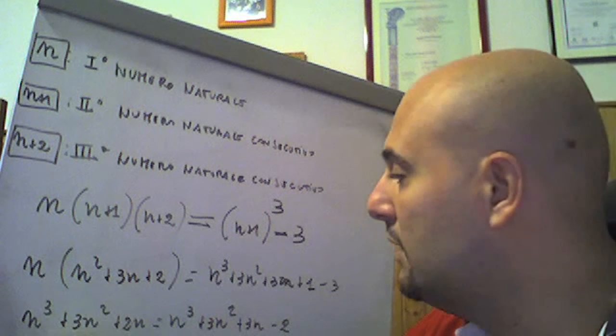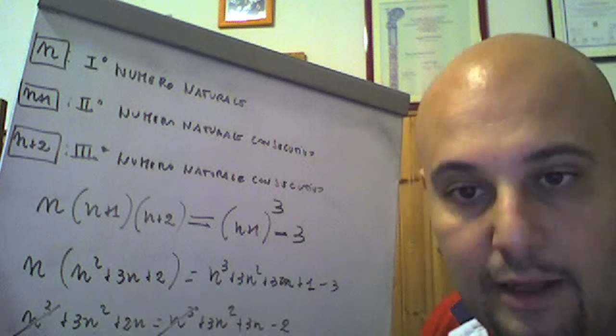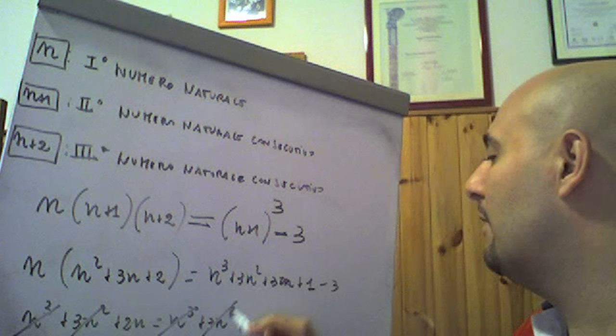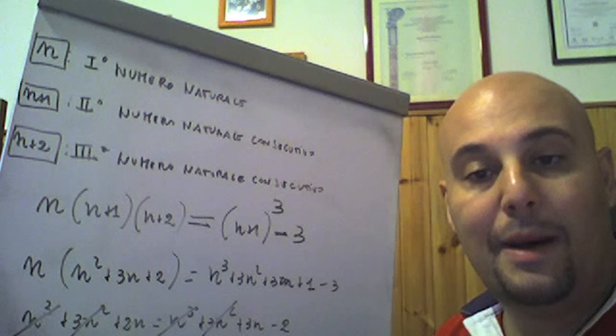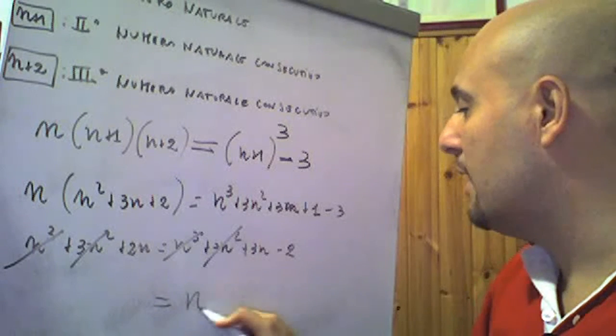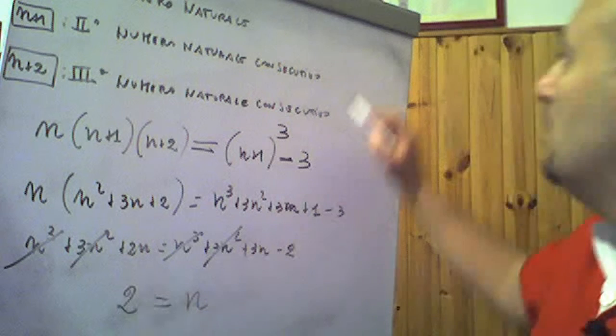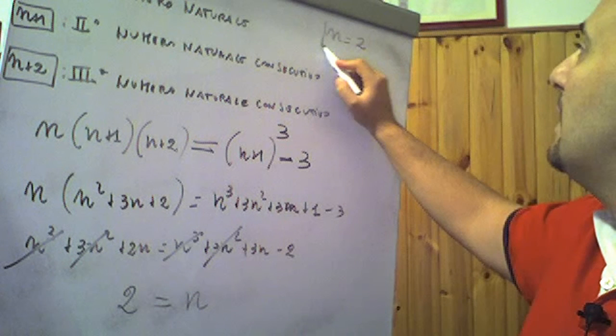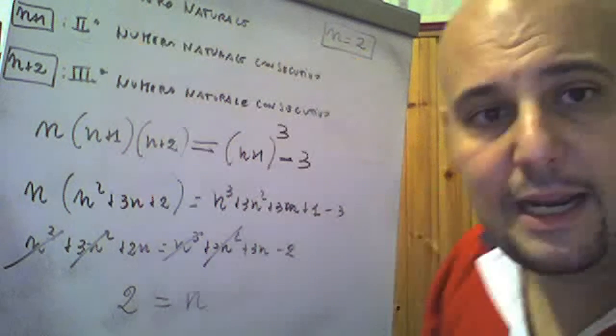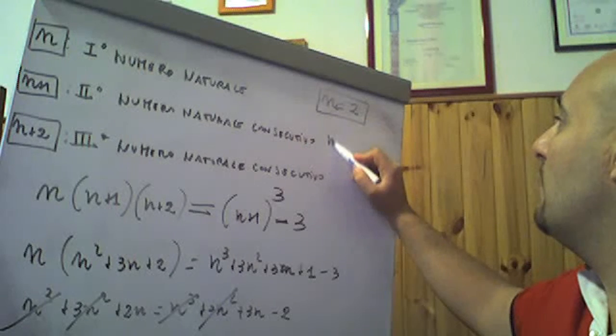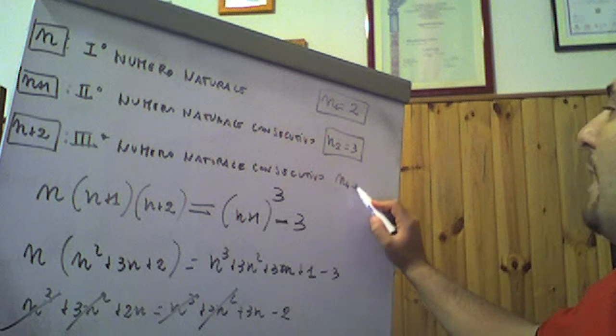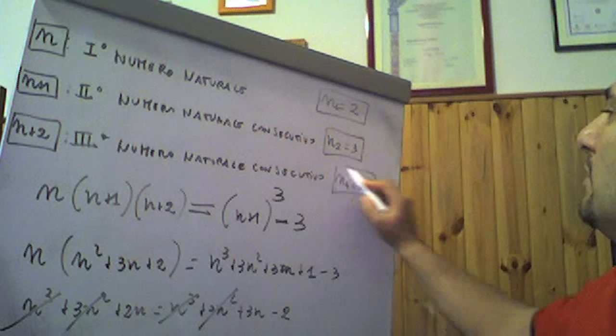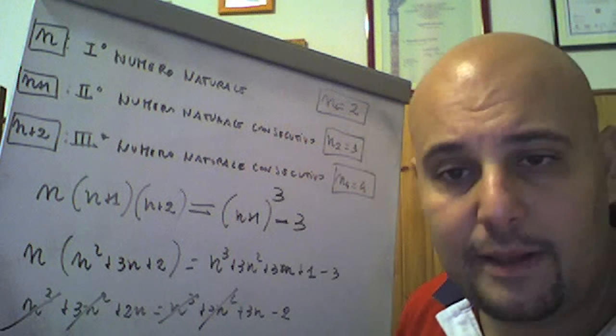Per la regola della cancellazione, se ne vanno n³ e 3n² da entrambe le parti. Trasportiamo il 2n da sinistra a destra cambiandolo di segno, in modo tale che 3n - 2n faccia n. Se portiamo -2 dall'altra parte, abbiamo ottenuto che n = 2. Il che vuol dire che i tre numeri naturali sono 2, 3, 4, tre numeri naturali chiaramente consecutivi.